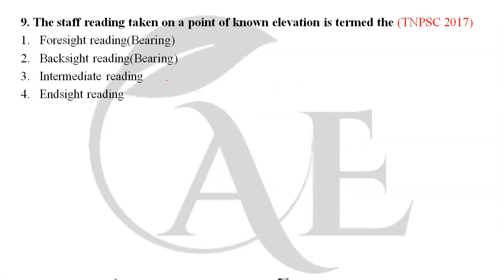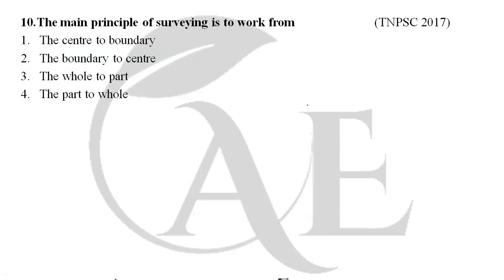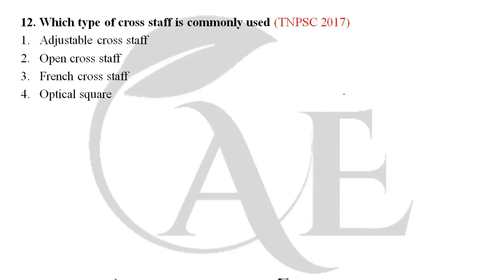Next question: the staff reading taken on a point of known elevation is termed as backsight reading. The main principle of surveying is to work from the whole to the part. So option 3 is the correct answer.